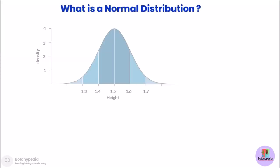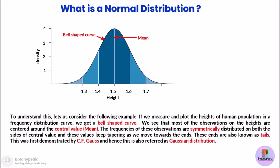So what is a normal distribution curve? To understand this, let us consider the following example. If we measure and plot the heights of a human population in a frequency distribution curve, we get a curve that looks like a bell shape — hence the name bell-shaped curve. We see that most of the observations on height are centered around the central value, which can be the mean, mode, or median. The frequencies of these observations are symmetrically distributed.